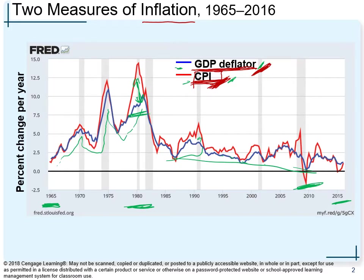Why, looking at this graph, did the inflation rate around 1978-79 increase by a lot based on the CPI, but based on the GDP deflator it increased only by a little? If you remember from microeconomics, the case study about lines at the gas pump — around 1978-1979, the price of gas increased tremendously because OPEC caused the price of crude oil to spike.